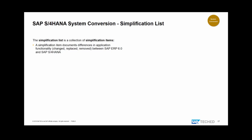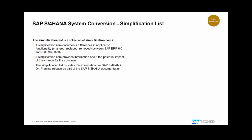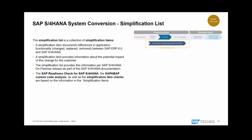A simplification item documents a disruptive change: what the change is, how you detect that you're affected, and what actions you need to take to continue using the functionality and configure the new one. It's a textual description, and all simplification items are available as a document — with full text search and table of contents. Importantly, it's also in a machine-readable format, providing input for tools like the readiness check for S/4HANA, custom code analyzers, and the simplification item check.